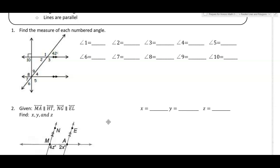For the first one, you're going to use a combination of linear pairs, vertical angles, and the parallel lines. For angle one, these two angles add up to 180, so 180 minus 42 gives you 138 degrees.